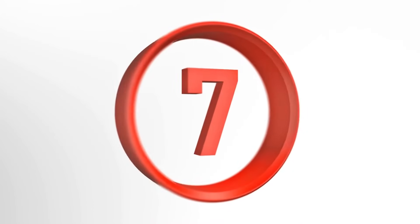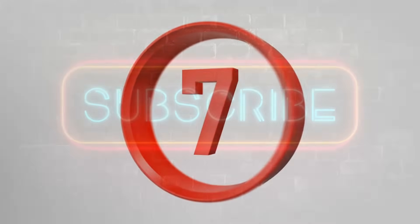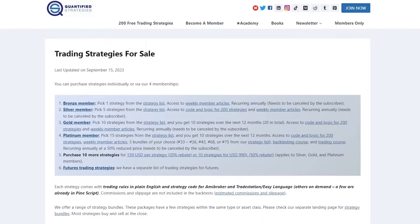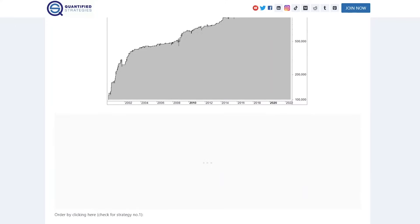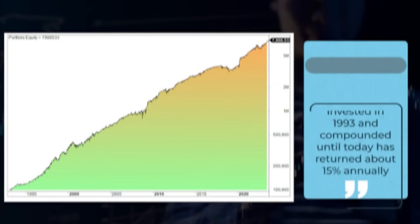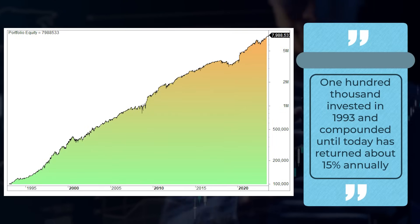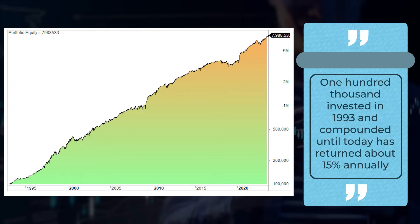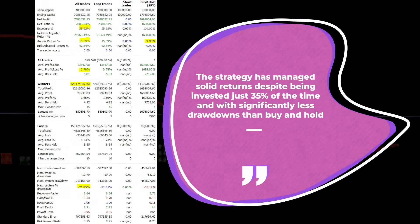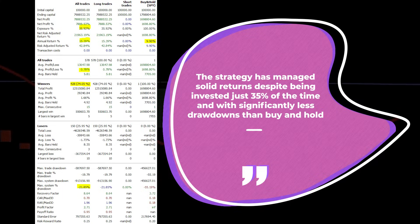The seventh and last of today's algorithmic trading strategies is a strategy available for our paying subscribers. It's a mean reversion strategy that trades S&P 500 and has just one variable to buy and one for when to sell, published years ago. $100,000 invested in 1993 and compounded until today has returned about 15% annually. The strategy has managed solid returns despite being invested just 35% of the time and with significantly less drawdowns than buy and hold.